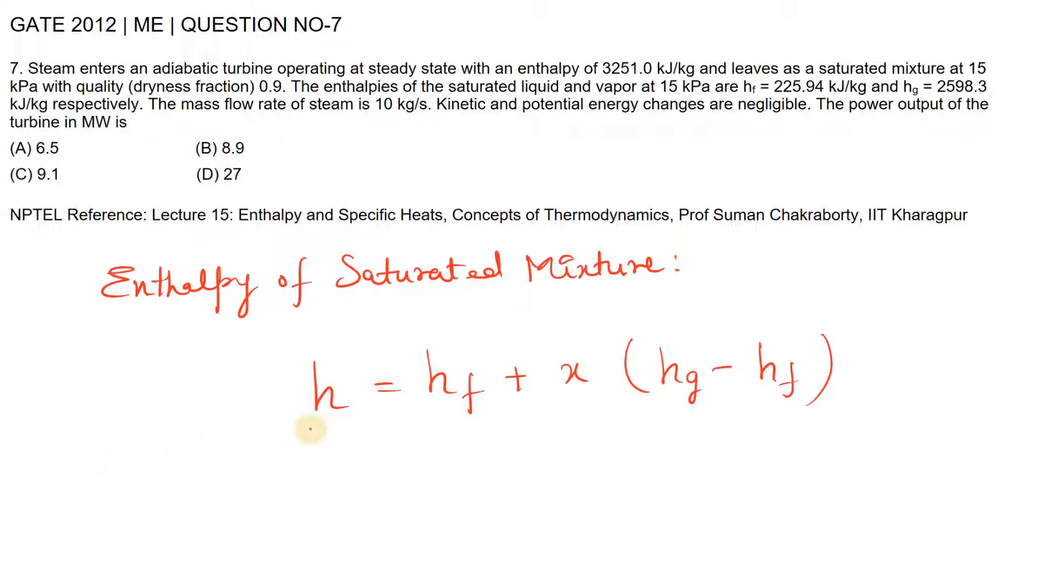Let the enthalpy of saturated mixture be H2. In the problem it is given: mass flow rate is 10 kilograms per second, x value is 0.9, Hf is 225.94 kilojoules per kilogram, and Hg is 2598.3 kilojoules per kilogram.